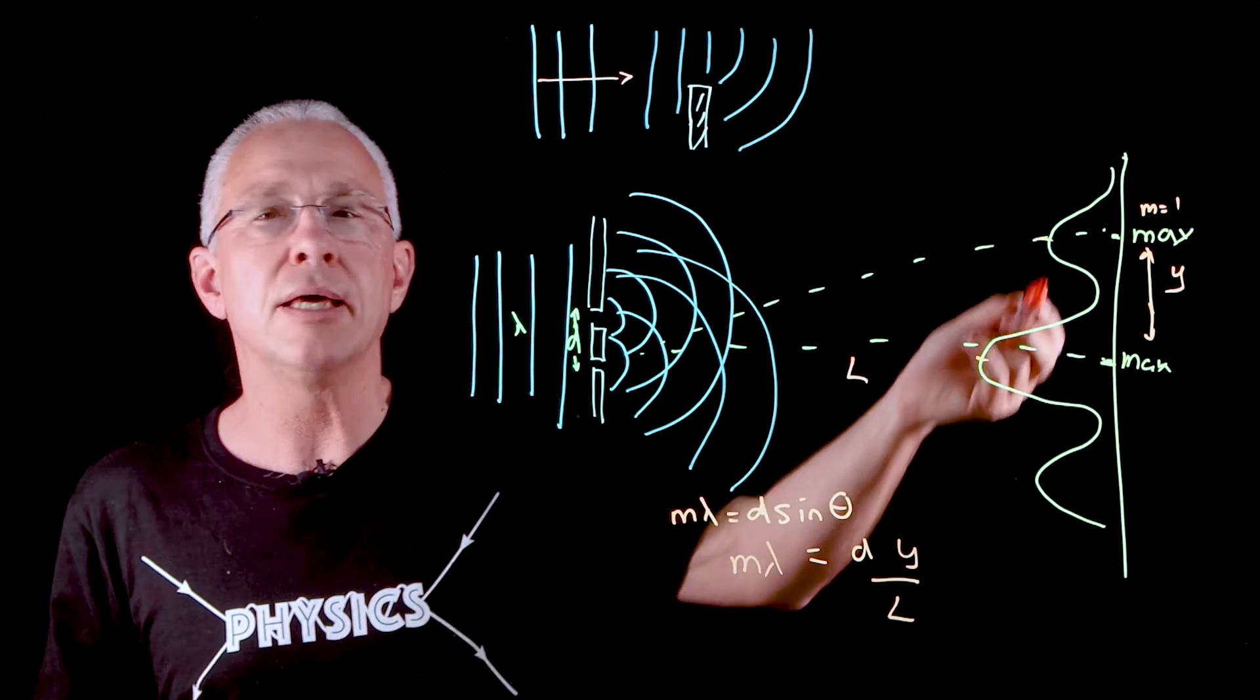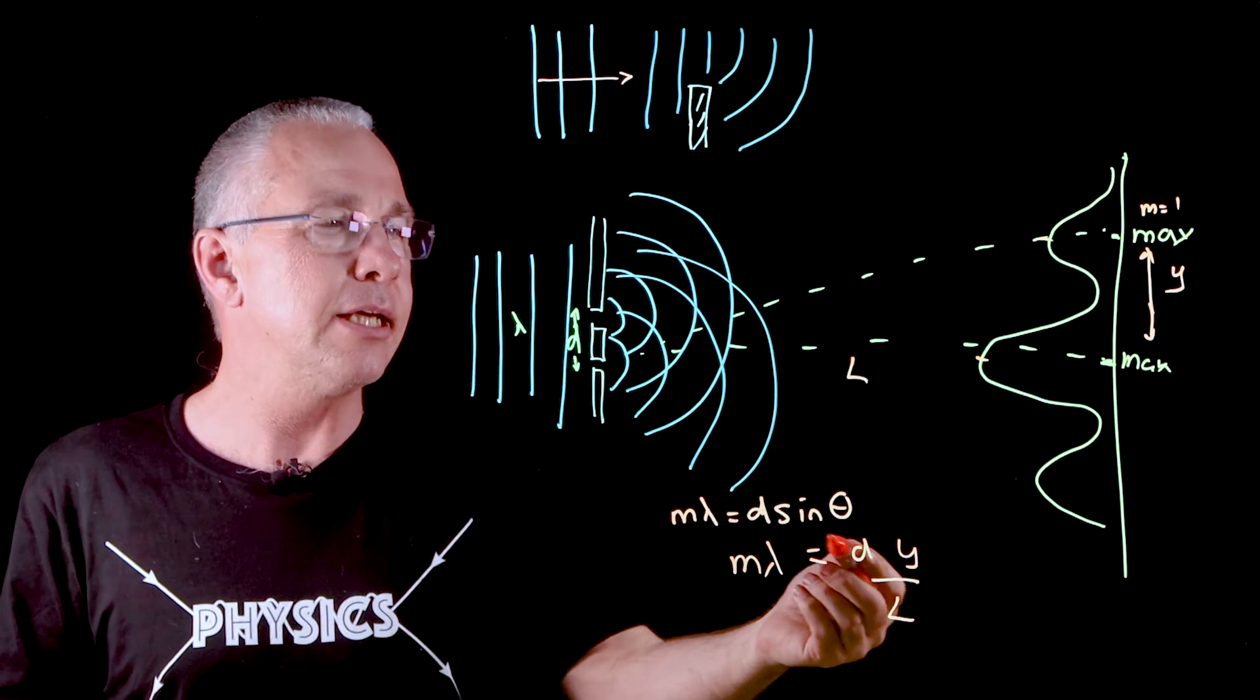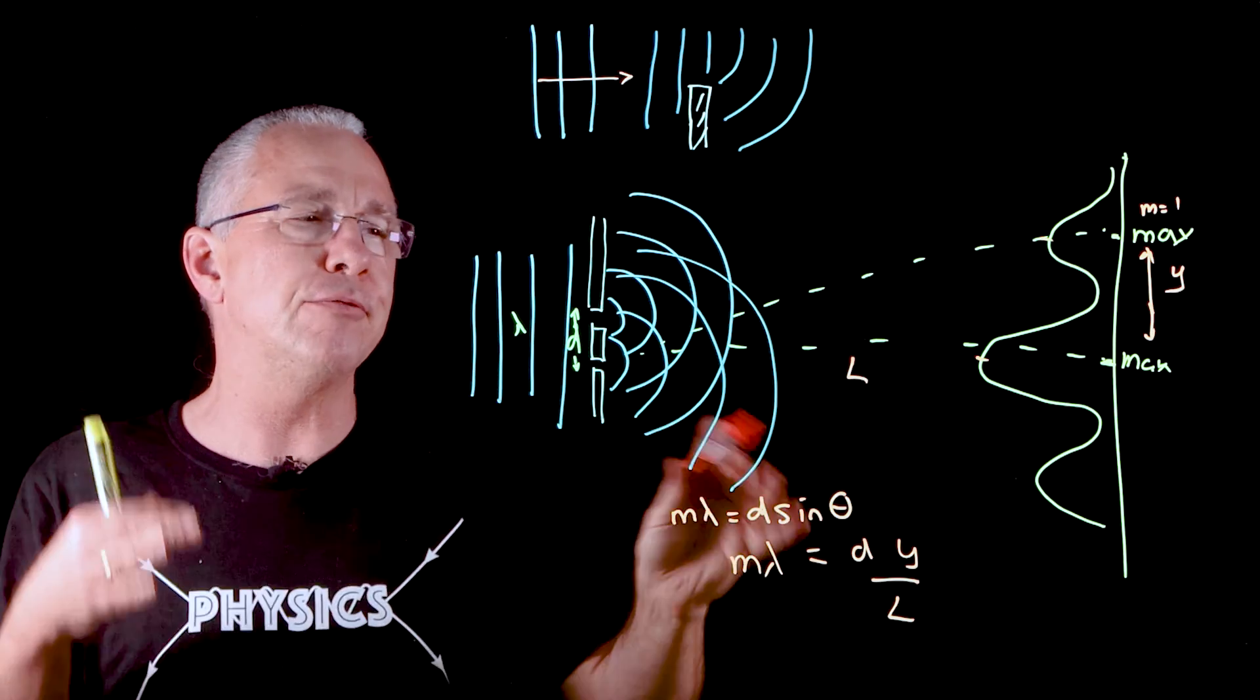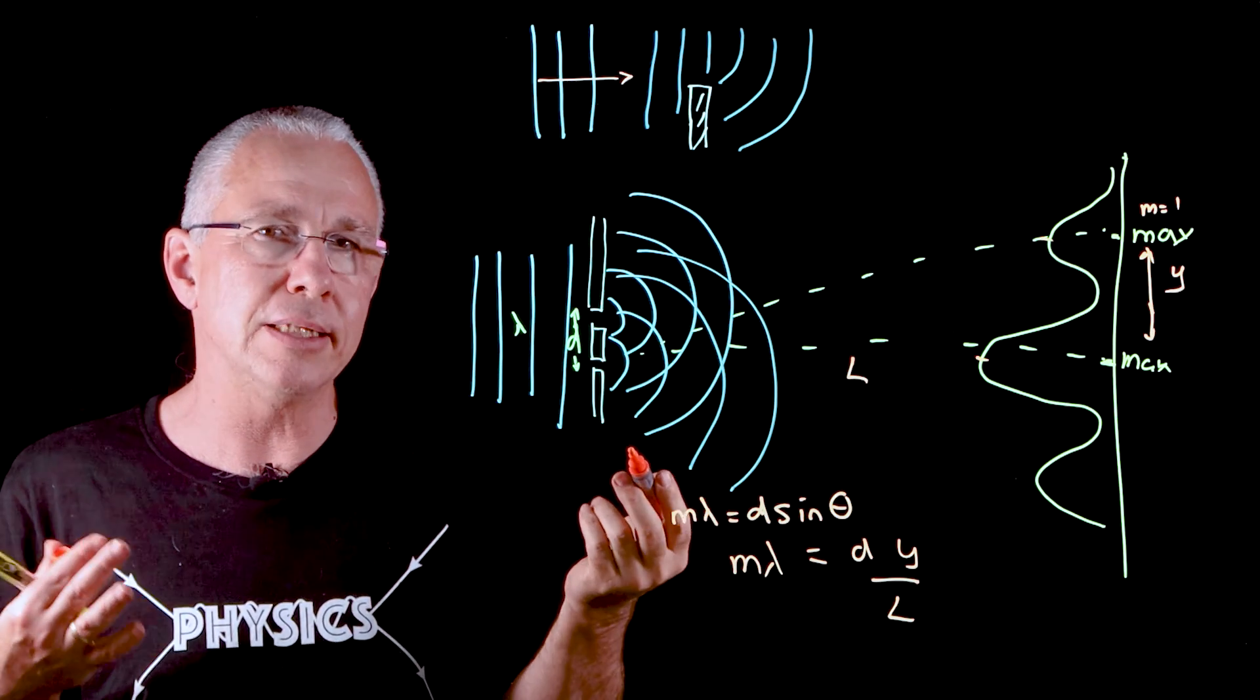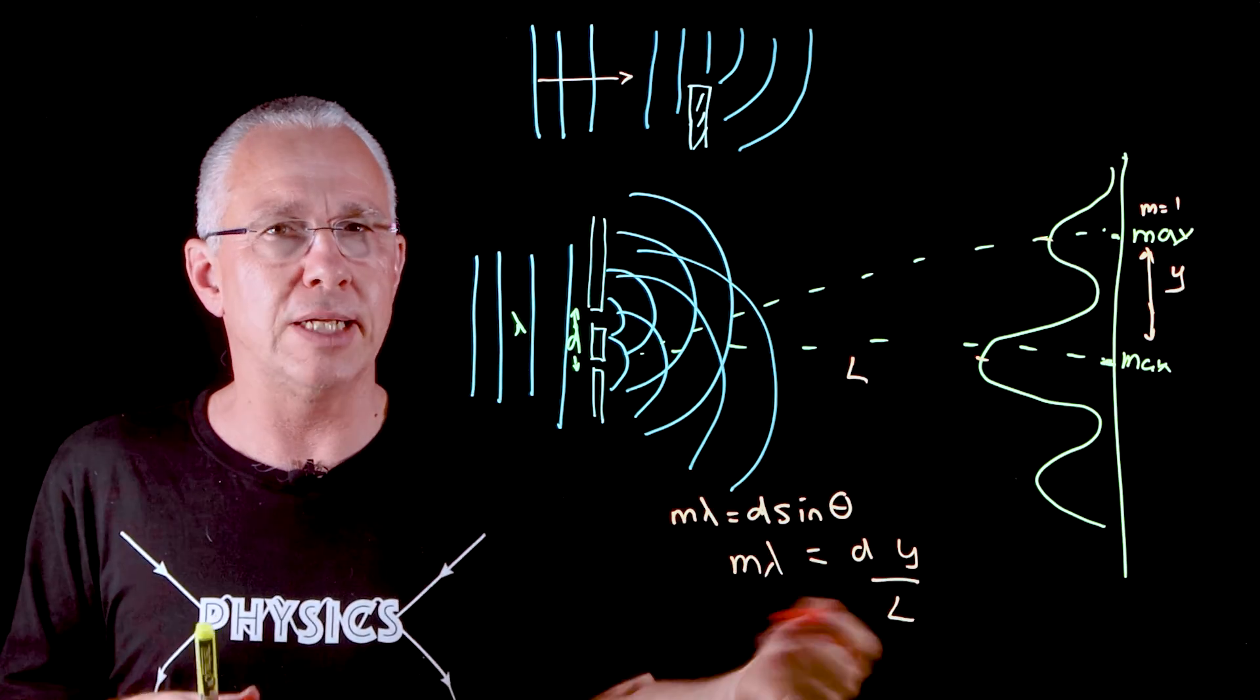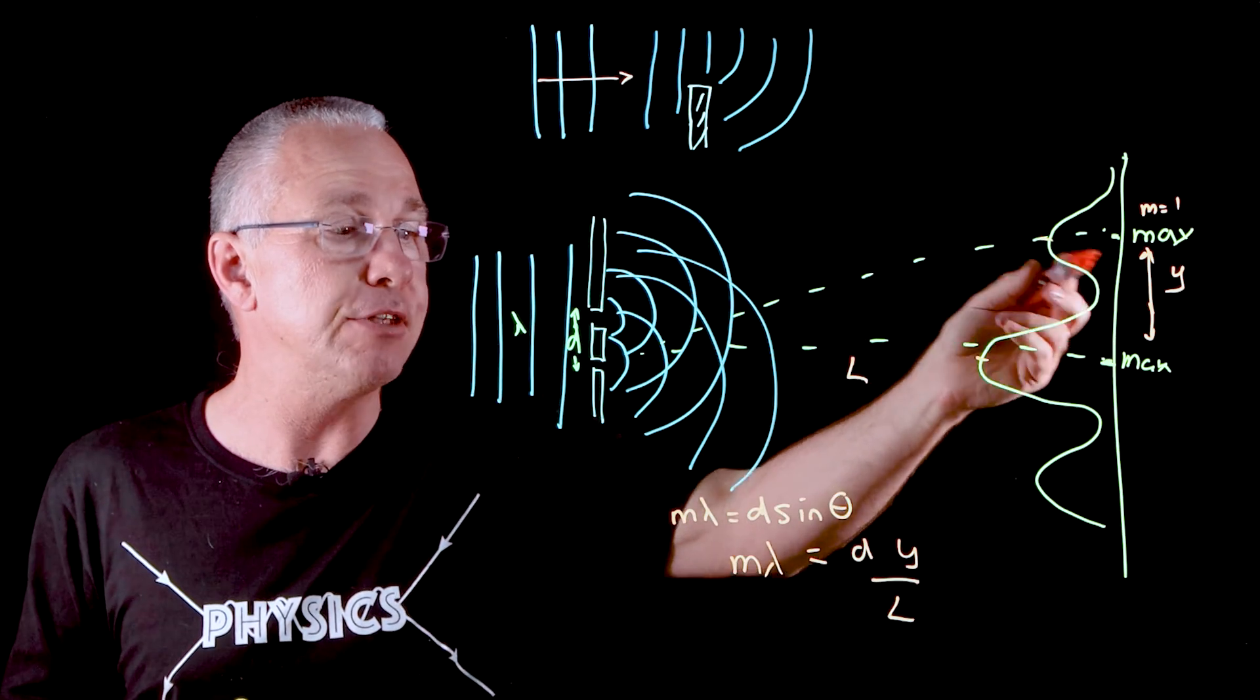What is m? Well, m is the number of maximum we have, and in this case we've got one. Lambda of course is the wavelength, d is the distance between the slit separation, y is the distance between the maximums, and l is the length. Now this only works for really small angles, so for example this angle will be less than a degree, and in fact once we get beyond five, six, seven degrees, then this mathematical relationship starts to break down. But you can see that if we increase the wavelength, then the distance here obviously will increase as well if we keep all things constant.